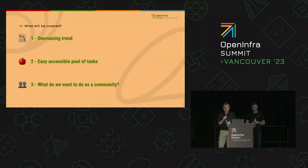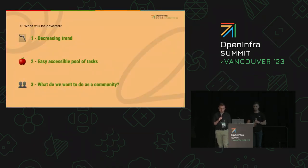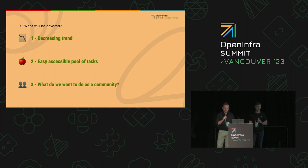The presentation will have just three main topics. The first one is going to be about the decreasing trend we noticed in the OpenStack community. The second part will be about a pool of tasks and we will explain how it relates to all of this. And the last part will be basically about what should we do as a community.